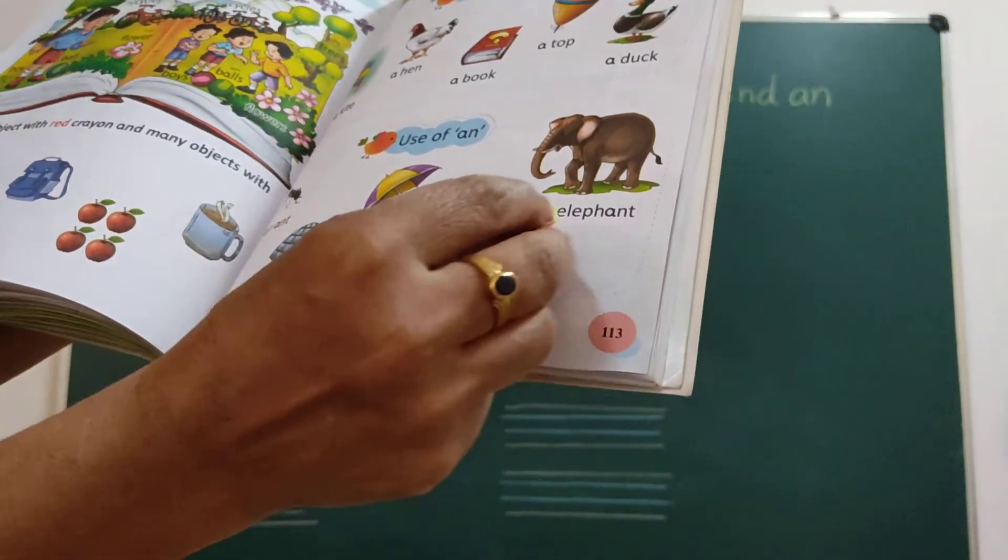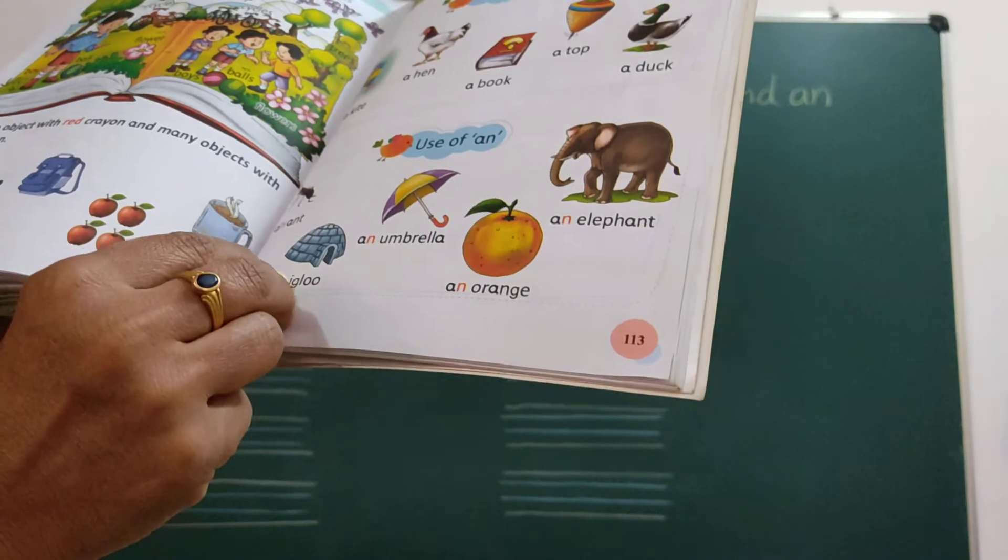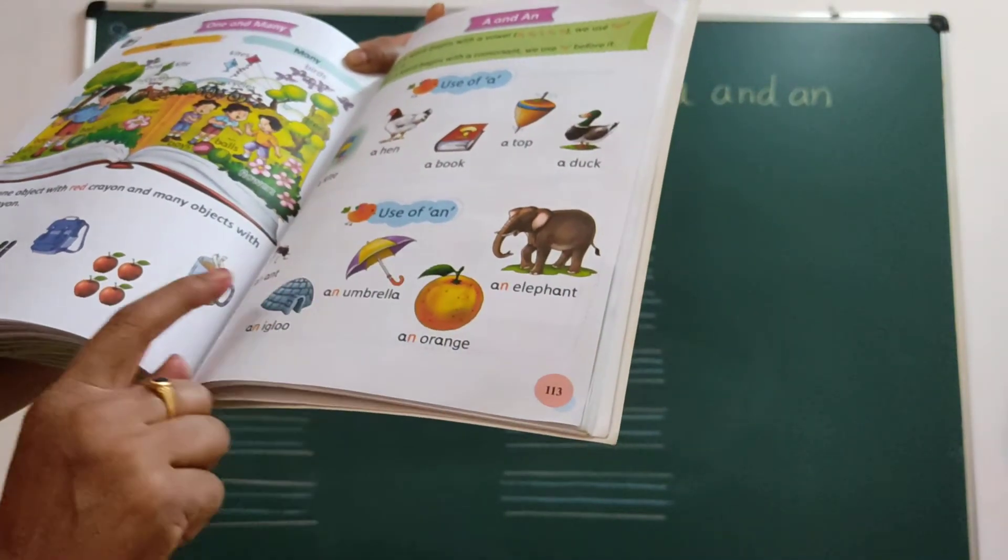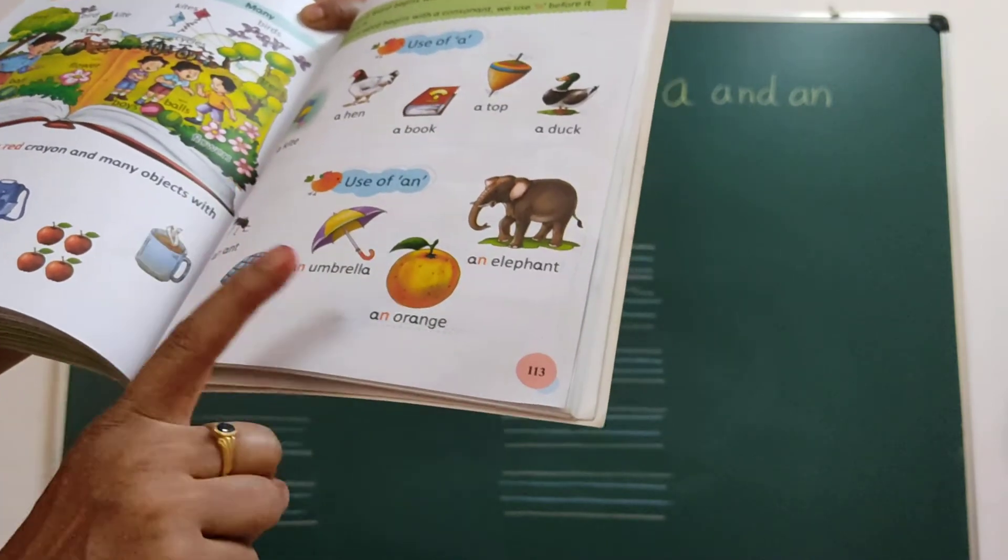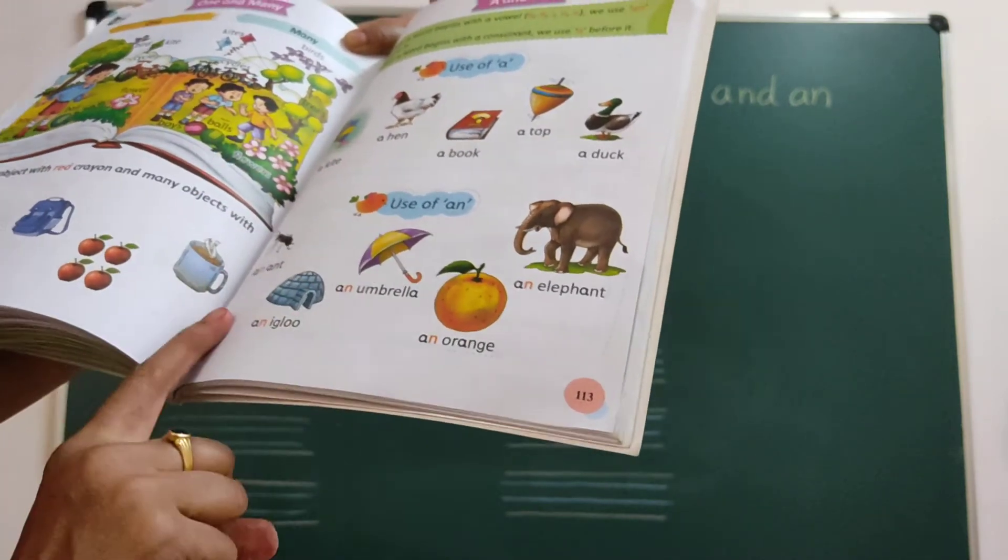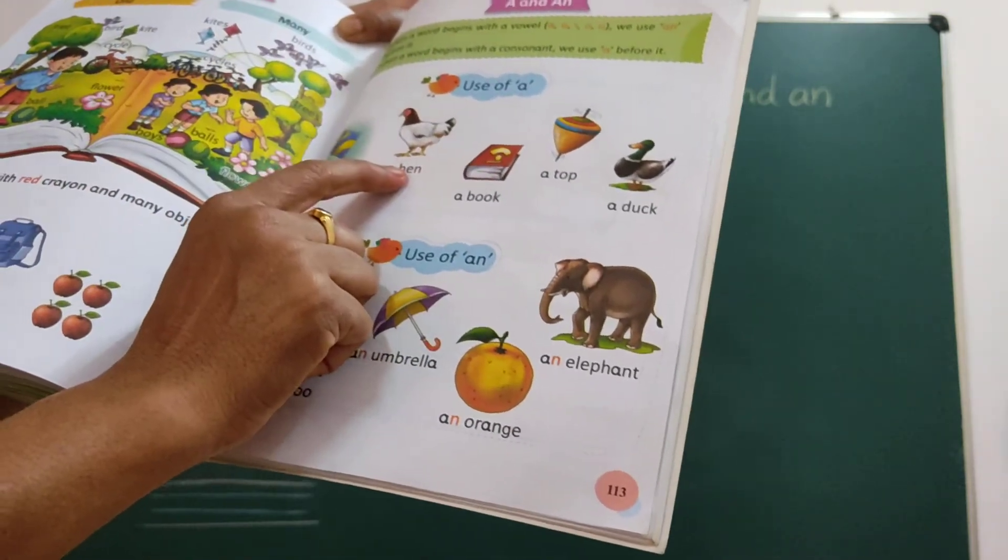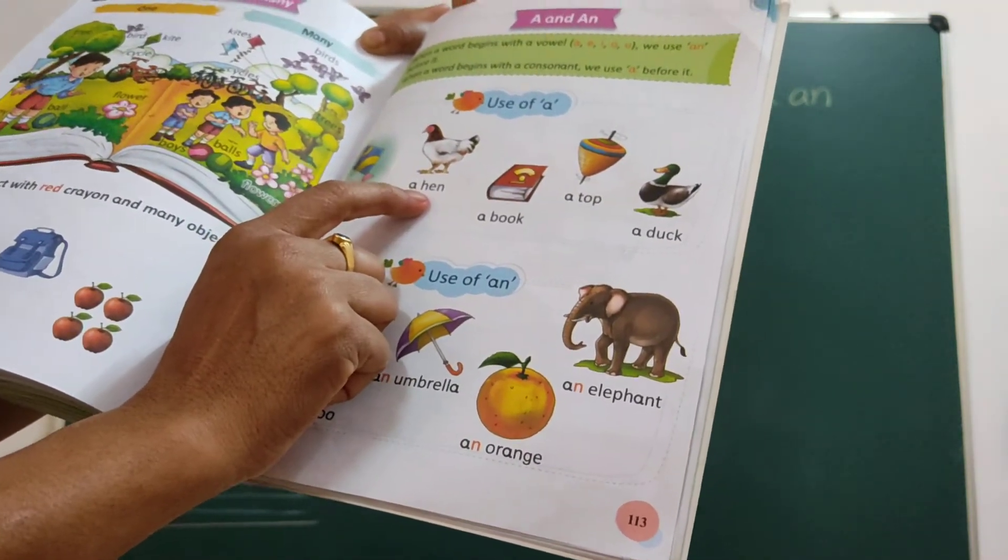A, An. A, An. A, e, i, o, u. What are the vowels? A, e, i, o, u. First letter vowels means we will start before that An. First letter consonant means we will use A.